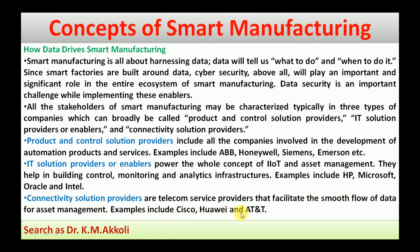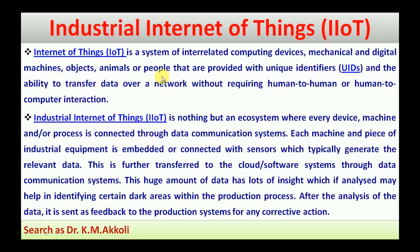IoT is a system of interrelated computing devices, mechanical and digital machines, objects, animals, or people that are provided with unique identifiers and the ability to transfer data over a network without requiring human-to-human or human-to-computer interaction.